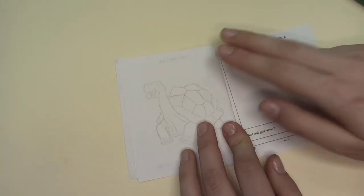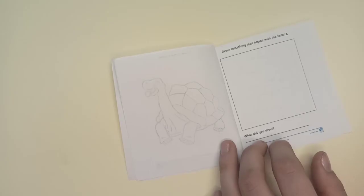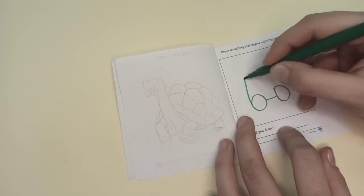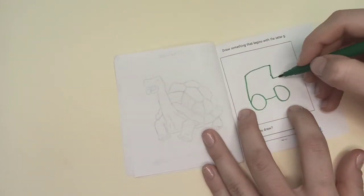Draw something that begins with letter T. T, T, T, T. I can draw tractor. Let me see how it looks like. Yeah, like that.